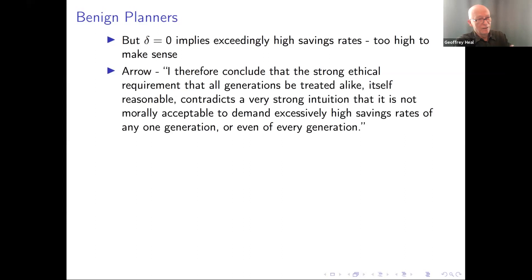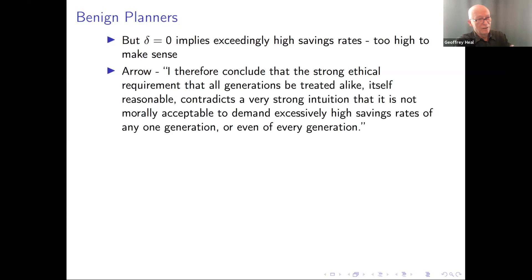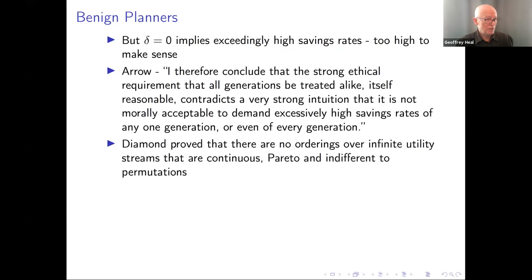Ken Arrow had a very interesting comment which we quote in the paper: 'I therefore conclude that the strong ethical requirement that all generations be treated alike, itself reasonable, contradicts a very strong intuition that it is not morally acceptable to demand excessively high savings rates of any one generation or even of every generation.' Diamond in a famous paper in Economic Theory proved that there are no orderings over infinite utility strings that are both continuous, Pareto, and indifferent to permutations of date. So you really cannot treat all generations equally while maintaining basic desiderata like Pareto optimality and continuity.